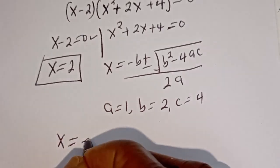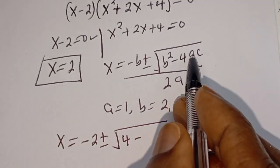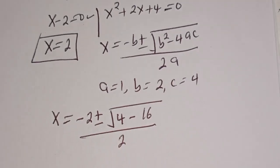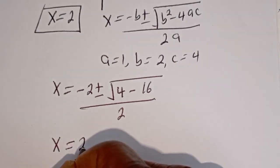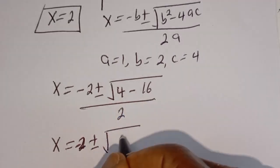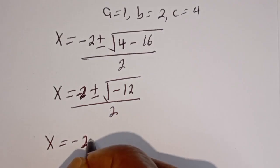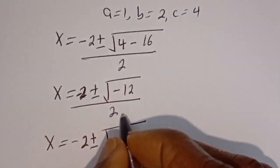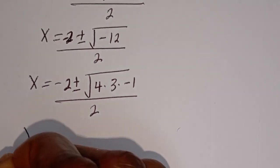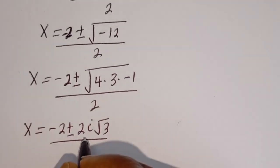Now s is equal to minus 2 plus or minus square root of b squared, that is 2 squared, which is 4, minus 4 multiplied by 1 multiplied by 4, that is 16, divided by 2 multiplied by 1. Then s is equal to minus 2 plus or minus square root of 4 minus 16, that is minus 12, divided by 2. The square root of minus 12 can be written as square root of 4 times 3 times minus 1, giving 2i root 3, divided by 2.